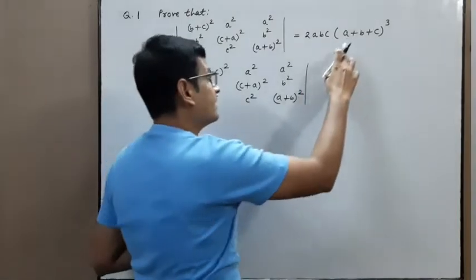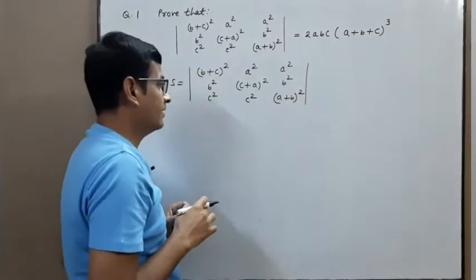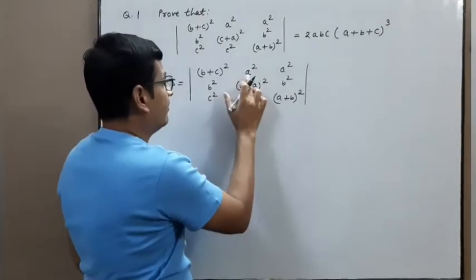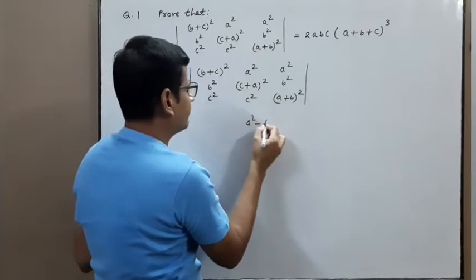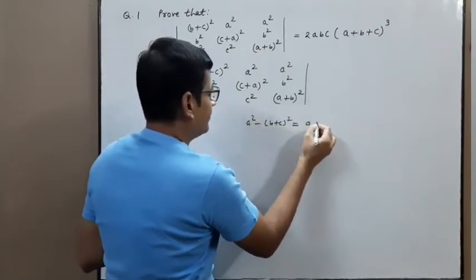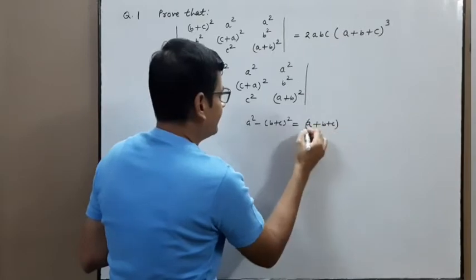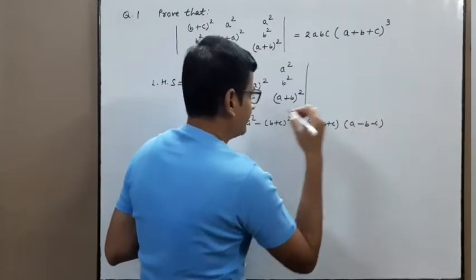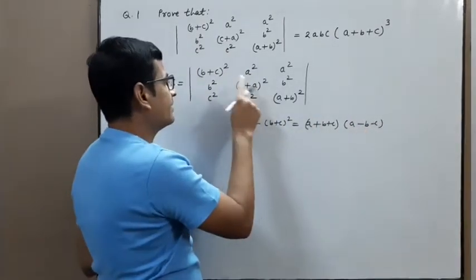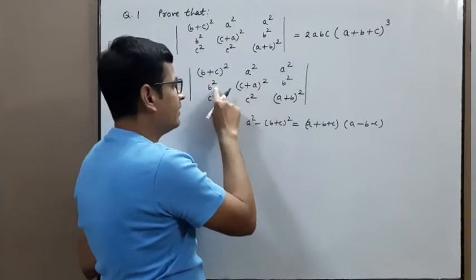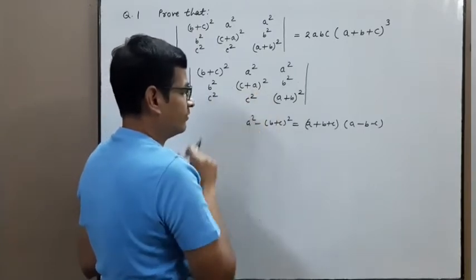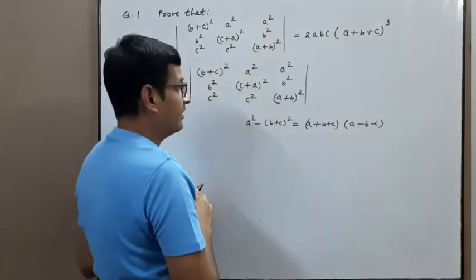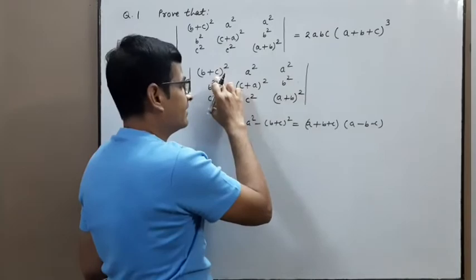Then go for the larger factor (a+b+c). When we subtract, a² minus (b+c)² equals (a+b+c)(a−b−c). Similarly, c² minus (b+c)² gives factors (c+a+b) and (c+a−b). This minus this gives zero. So apply C2 → C2 − C1. Similarly, a² minus this again gives the same factors.